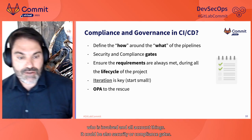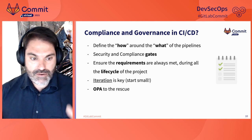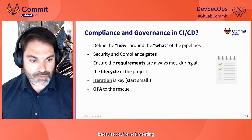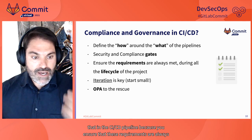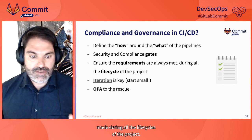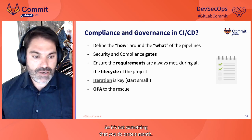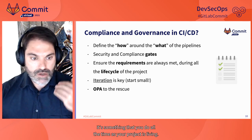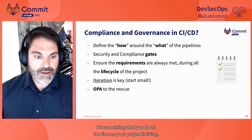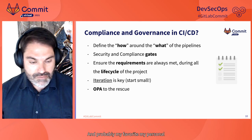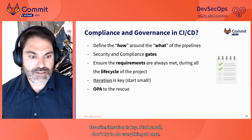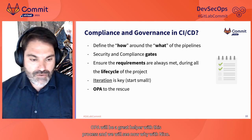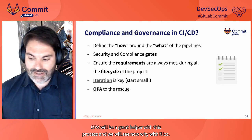It could also include security or compliance gates: if something is failing, you can have jobs that make the whole pipeline fail because you're not meeting requirements. That's a great way to ensure requirements are always met throughout the lifecycle of the project — not just once a month, but continuously. And iteration is key: start small, don't try to do everything at once. OPA will be a great helper with this process, and we'll now see why with Nico.